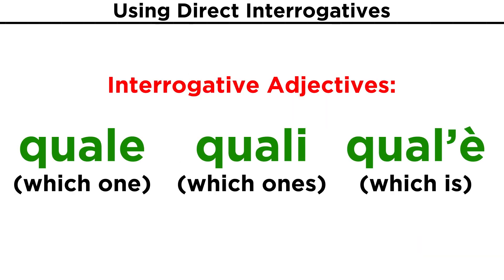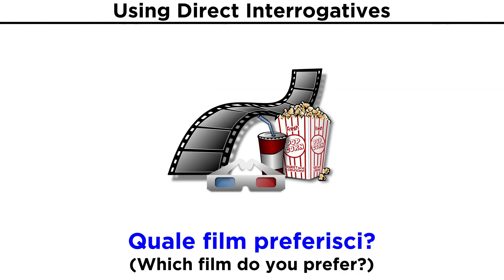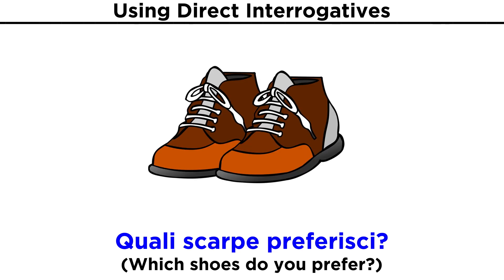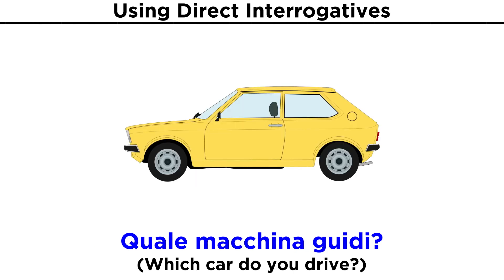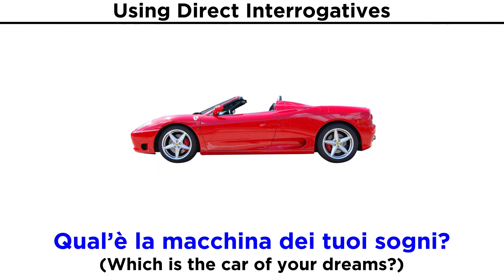There are some adjectives we need to know that will help us ask questions. We may want to ask which one. This will require the word quale for the singular and quali for the plural. Quale also has the variation qual è, which means which is. Quale film preferisci? Quali scarpe preferisci? Qual è il tuo film preferito? Quale macchina guidi? Qual è la macchina dei tuoi sogni?